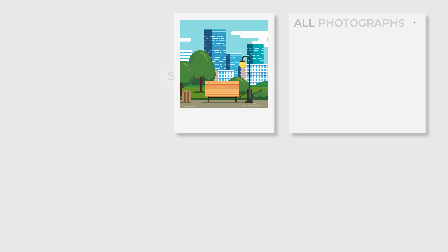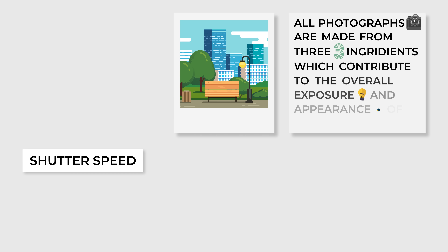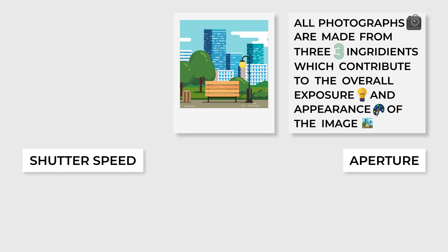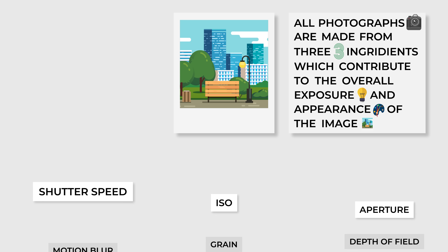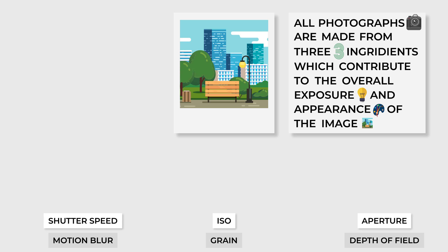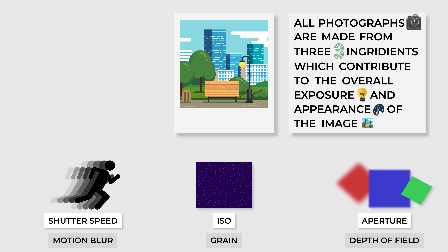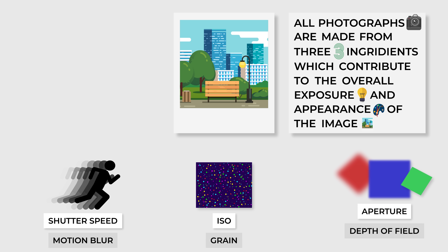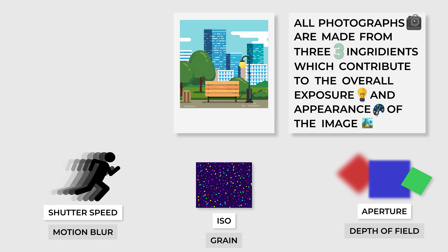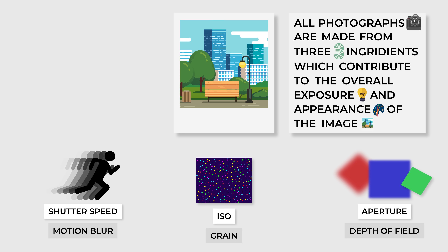A properly crafted photo is made from three ingredients: shutter speed, aperture, and ISO. Together, these three camera settings contribute to the overall exposure of an image, as well as its depth of field, level of motion blur, and appearance of grain.